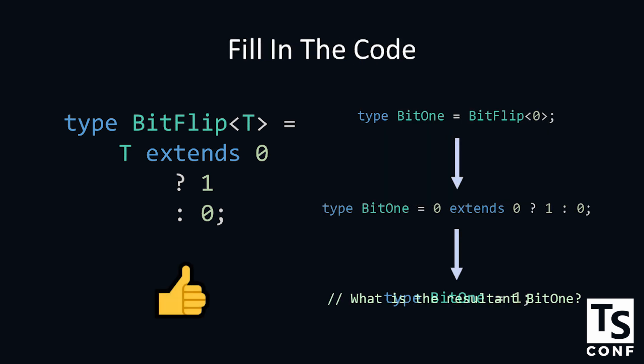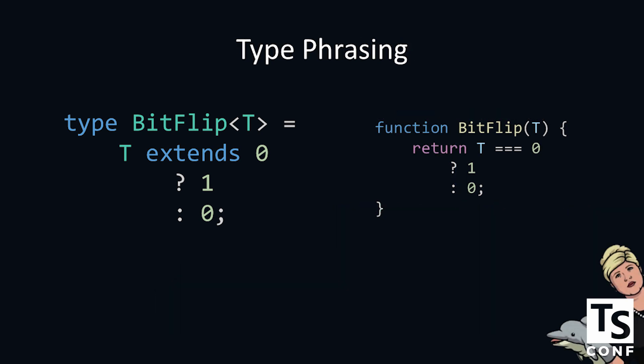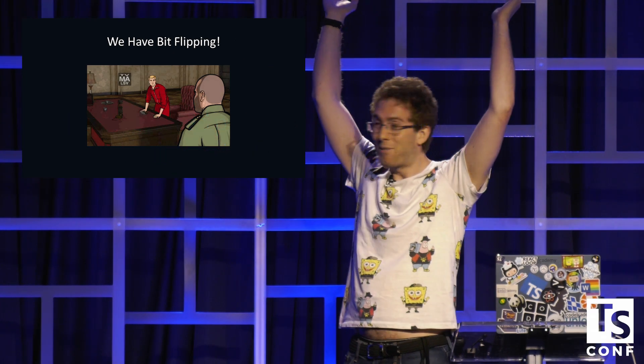Type bit 1 equals — well, does 0 extend 0? If so, 1, otherwise 0. Type bit 1 equals 1. That's exciting. That's bit flipping in the type system. That works. Now, if we want to look at the phrasing for this, this is kind of like a JavaScript function. It takes in a T, and if the T is 0, then we return 1, otherwise we return 0. So we not just have bit flipping of the type system, we have functions.